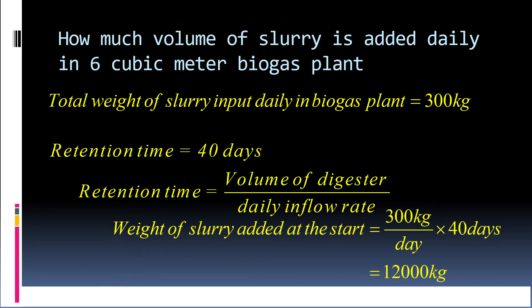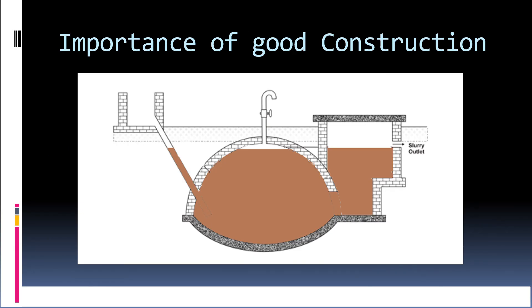And to find the volume you need density. So density of the cattle dung is around 1100 kg per cubic meter, which will give you around 11 cubic meter volume. It is important to construct the biogas plant from trained mason only.